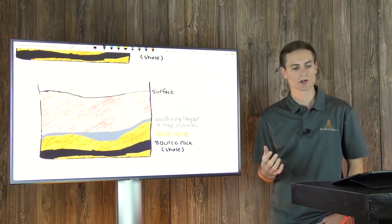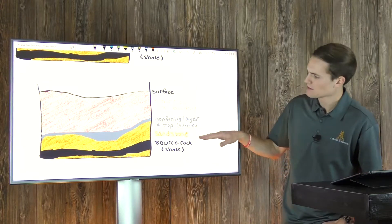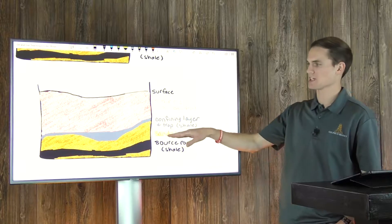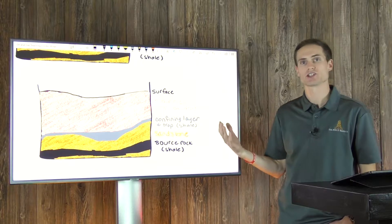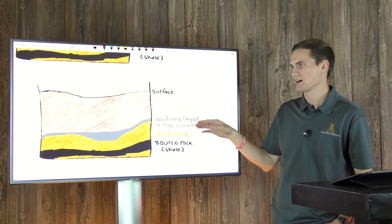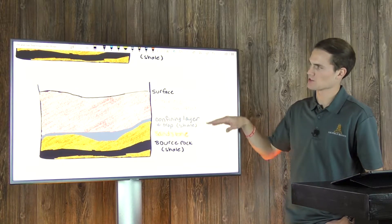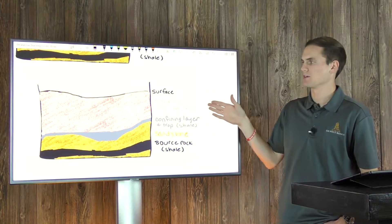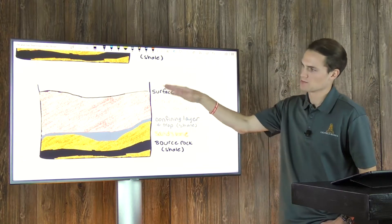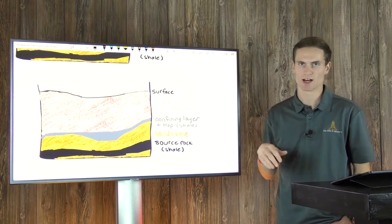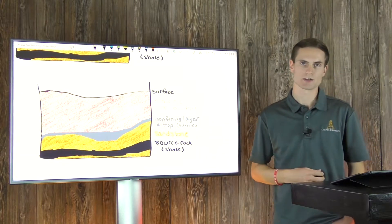Keep in mind that above the source rock we have sandstone. Sandstone in this example is above it, and then above that we're going to have another layer of shale — we'll call that the confining layer or the trap. Above that we're going to have other rocks, a bunch of different layers of varying rock types, but we're just focused on these formations.